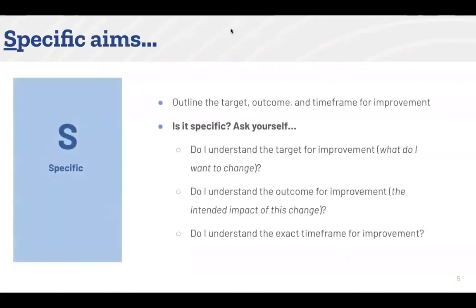The specific component of your AIMS outlines the target for improvement — what specifically you want to change — the outcome for improvement or your intended impact, and a time frame for improvement. In other words, an AIM is specific when it can answer who, what, where, and when of the goal your organization is setting.